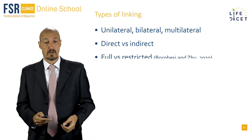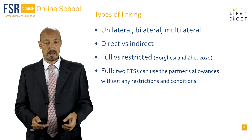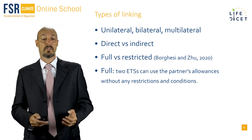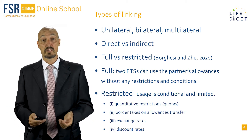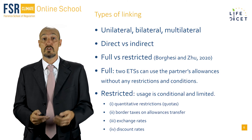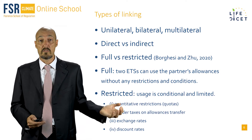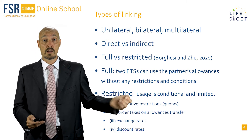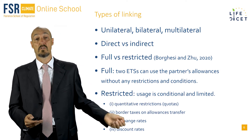Finally, we distinguish between full and restricted linking. You have full linking when the two ETSs can use the partner's allowances without any restriction. And restricted, obviously, when there are restrictions, when the use is conditional. Restrictions can take several forms: quantitative restrictions, quotas, border taxes on allowance transfers, exchange rates or discount rates.